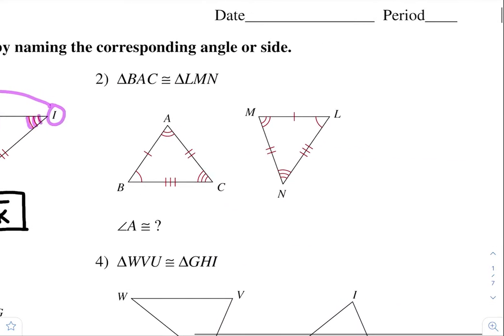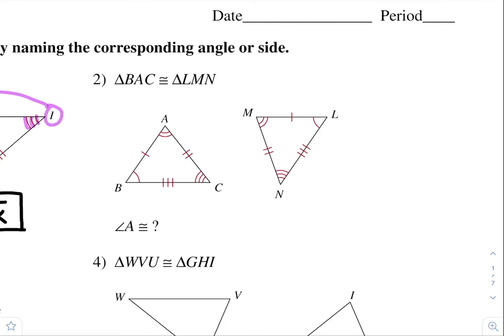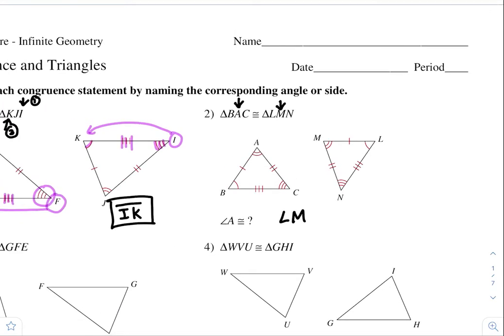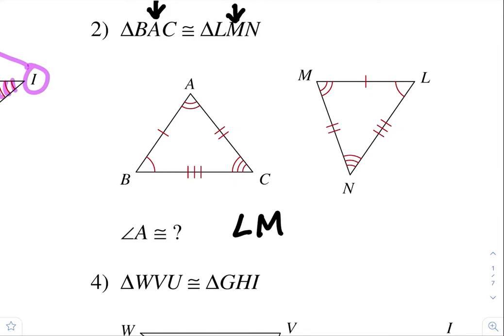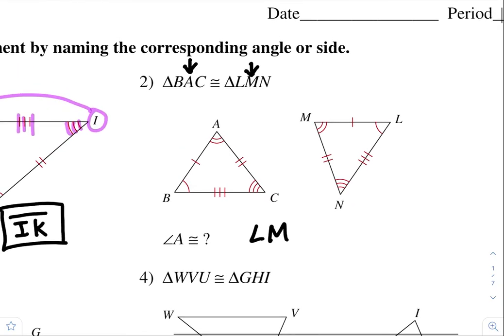Number two. It says which one is angle A congruent to. We have triangle BAC — which angle is also congruent to angle A for the other triangle? I always use the congruency statements. A is in between B and C, so that means the corresponding angle must also be in between the two. So this one's angle M. Another way you guys could have seen it is angle A has two arcs, and angle M also has two arcs. So this is angle M.